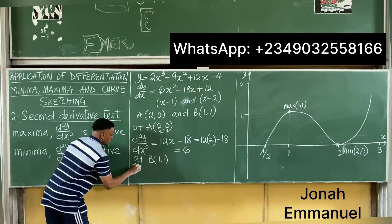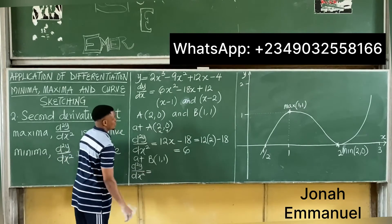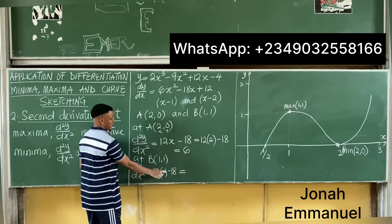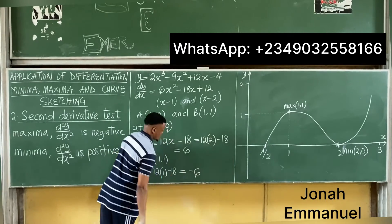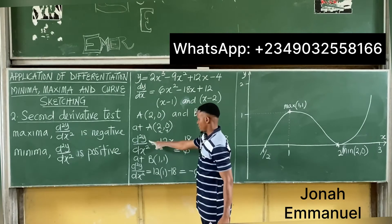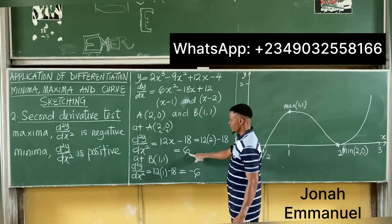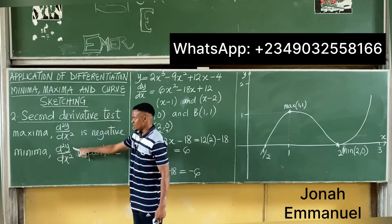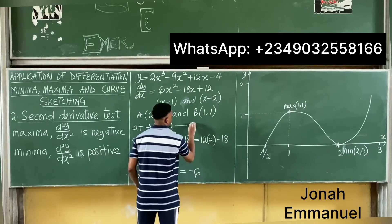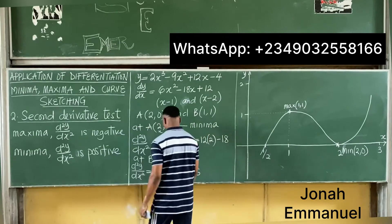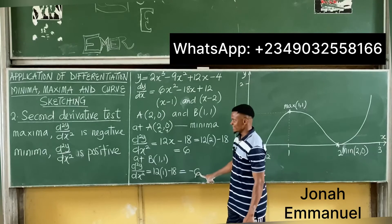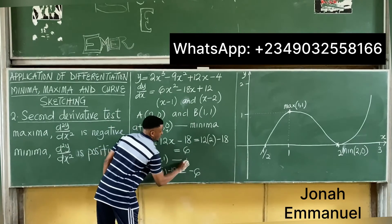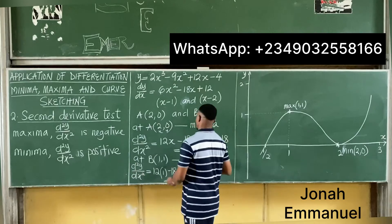Now at point B, x = 1: d²y/dx² = 12(1) - 18 = 12 - 18 = -6. Observe that at point A (2, 0) d²y/dx² is positive, which means it is a minima. At point B (1, 1) d²y/dx² is negative, which means it is a maxima.